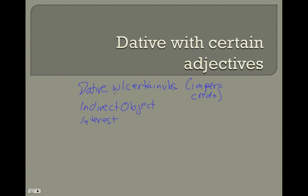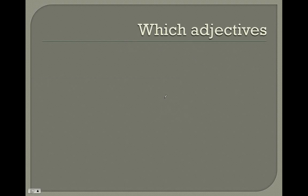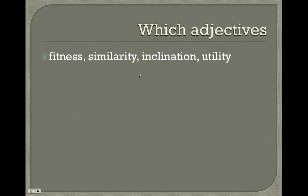Now we'll find that there are certain adjectives which, in order to complete the idea of the adjective — in order for that adjective to have a complete thought — the dative will complete that thought. In general, these are adjectives that express fitness, similarity, inclination, utility, and their opposites.